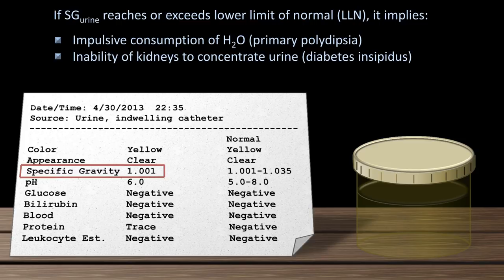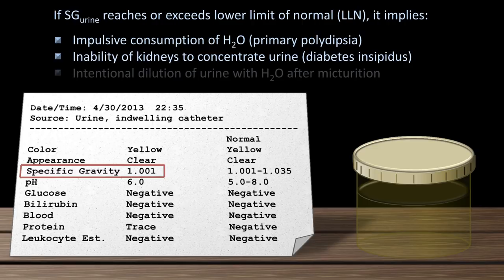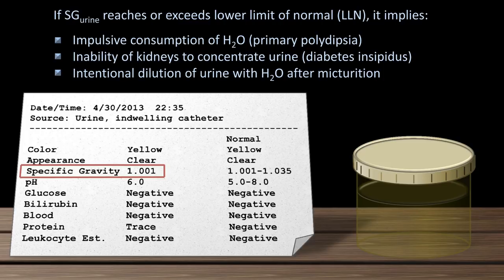The patient's kidneys may be unable to concentrate the urine, a condition called diabetes insipidus, not to be confused with the other diabetes that's associated with blood sugar. Or last, the patient has intentionally diluted the urine with water after micturition. Why would someone want to do that? Trying to pass a drug screen. It can work, but it's impossible for an individual to guess at how much water to add in order to adequately dilute the urine to make the drug undetectable without making it so dilute as to become physiologically impossible. Not taking illicit drugs is a much more reliable means to pass a urine drug test.